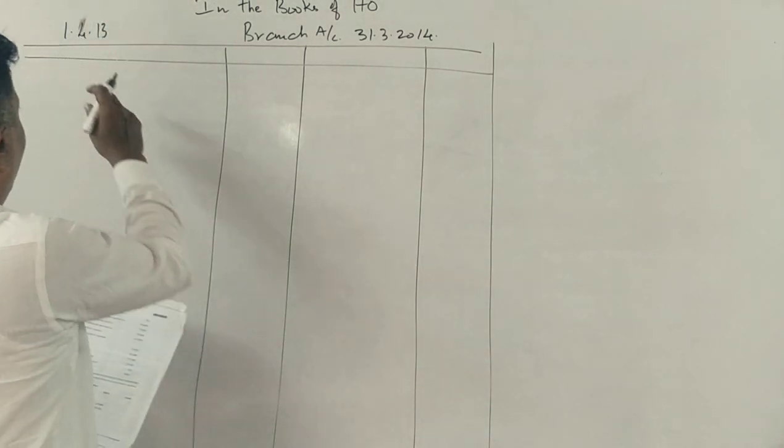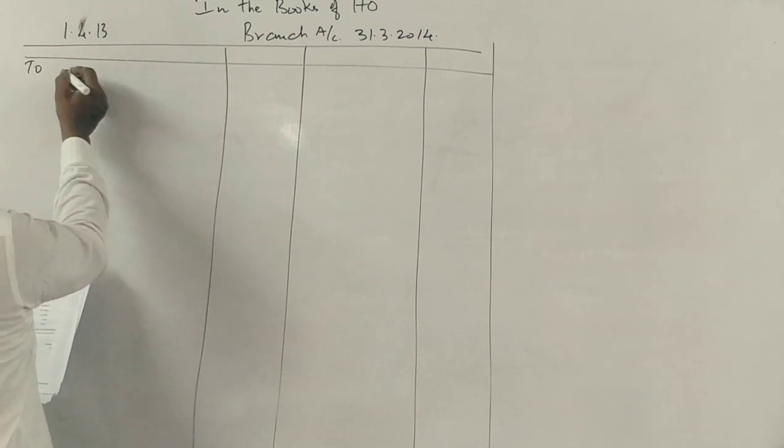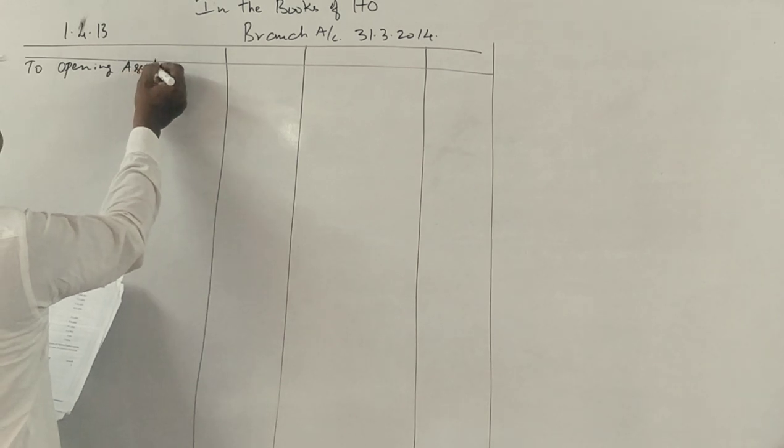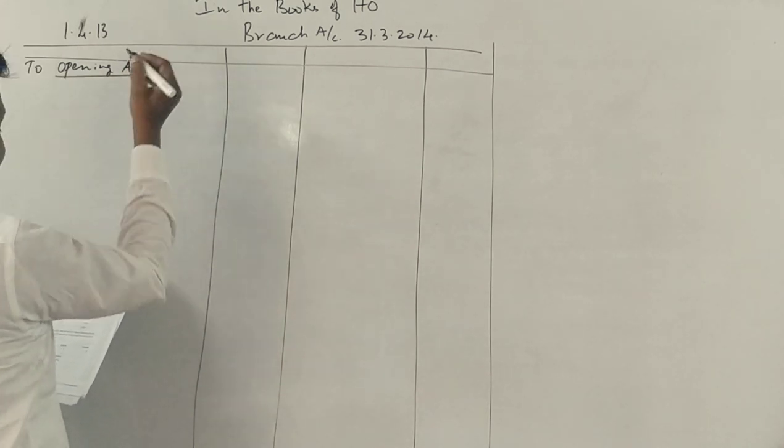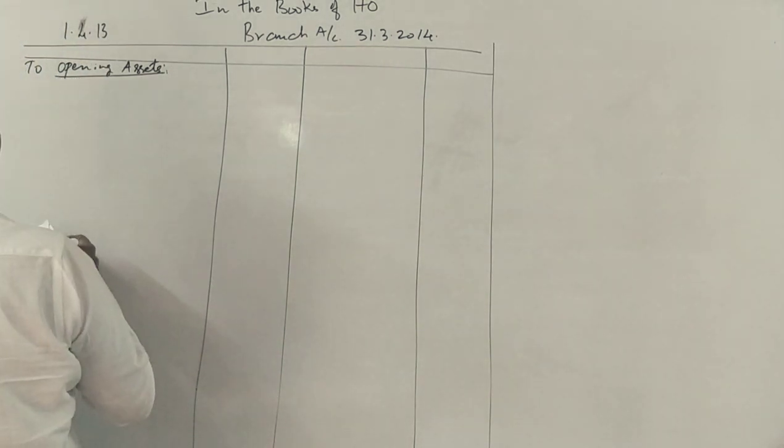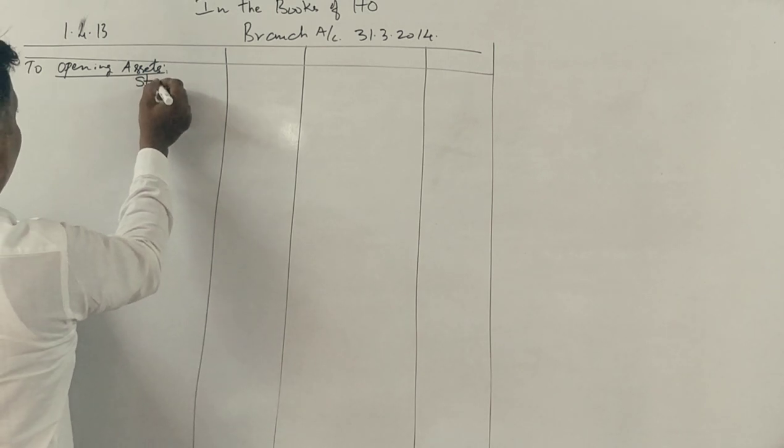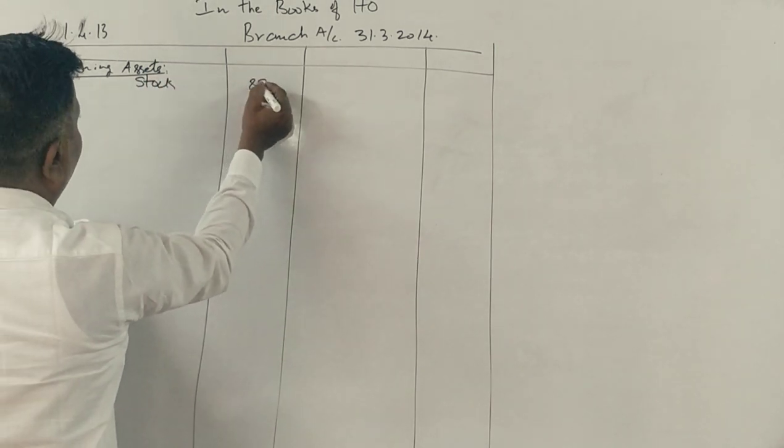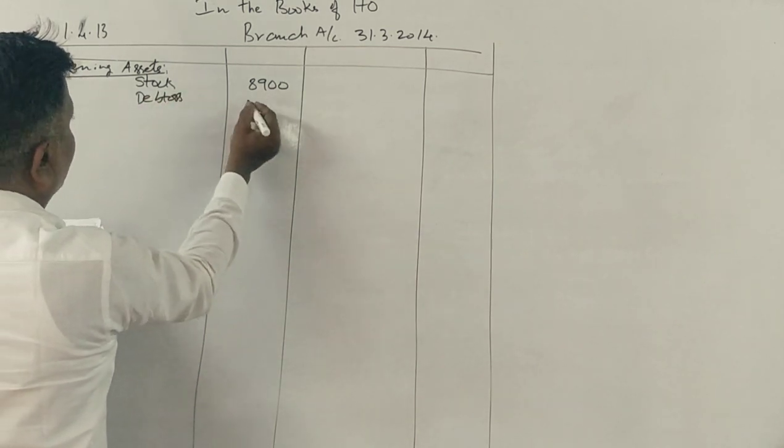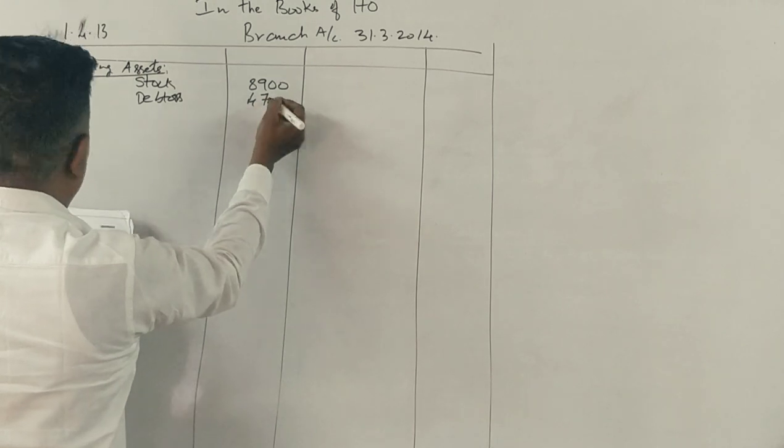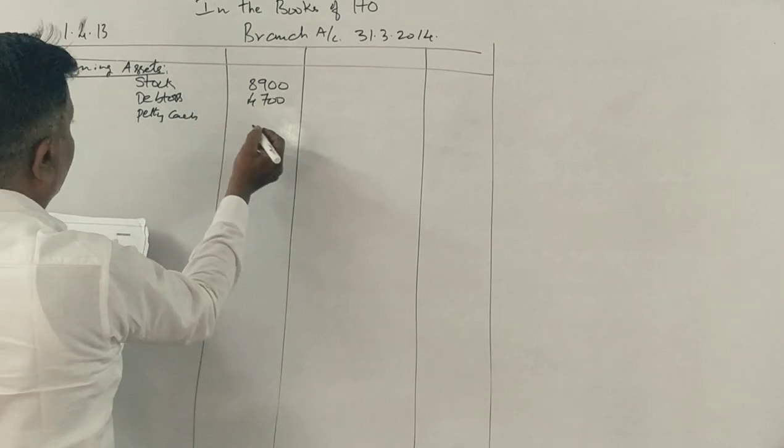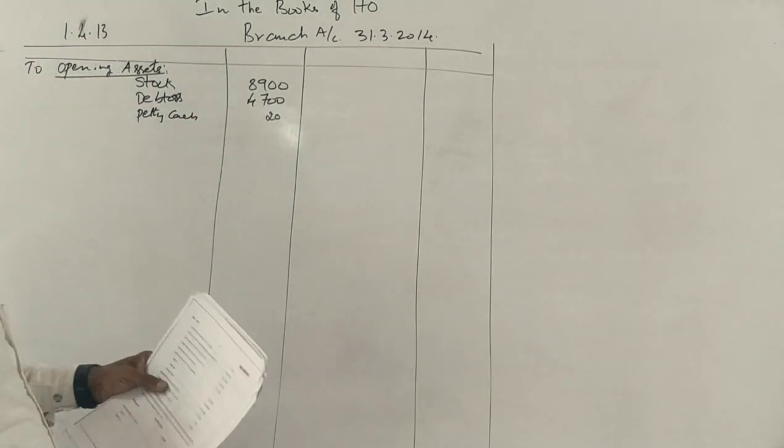Till 1st April 2013, any opening balances, opening assets are all here. How are opening assets? Stock, what is it? 8,900. Debtors, what is it? 4,700. Petty cash, 20 rupees, correct. These are opening assets.